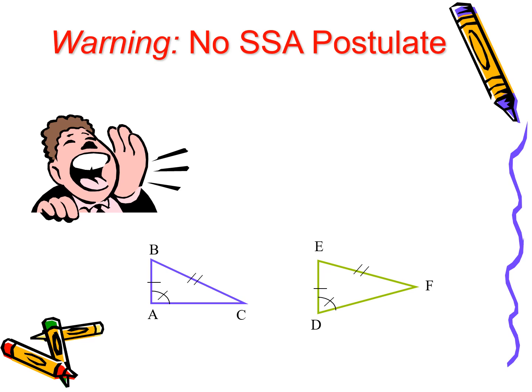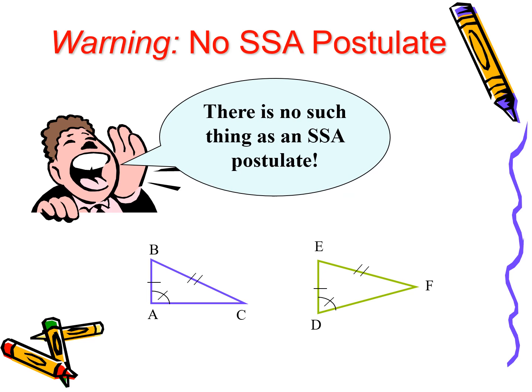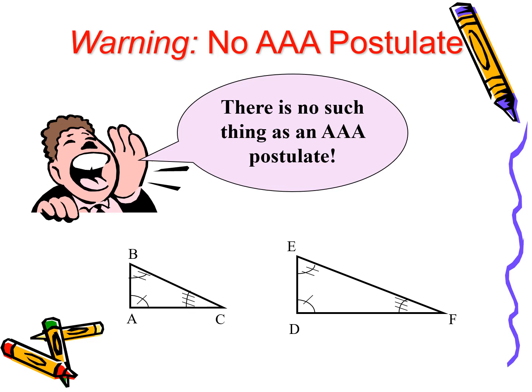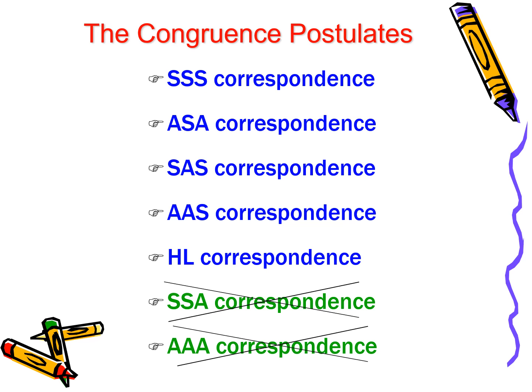There is a warning: there is no SSA postulate. If two triangles are proven through SSA, you can conclude they are not congruent. Another warning: there is no AAA postulate. If two triangles use the AAA postulate, they are not congruent at all. Avoid SSA and AAA. There are only five valid congruences you can use: SSS, ASA, SAS, AAS, and HL.